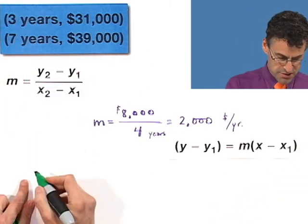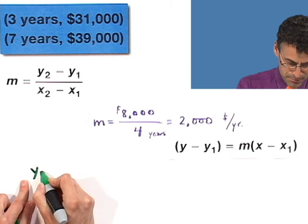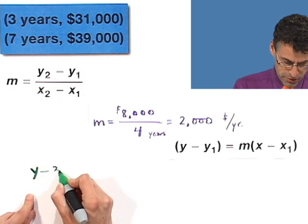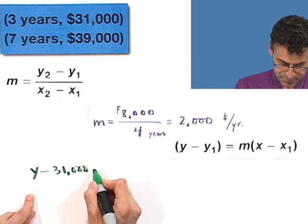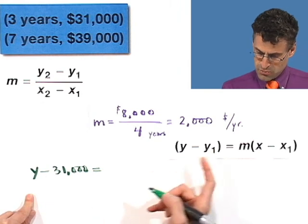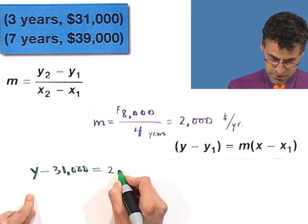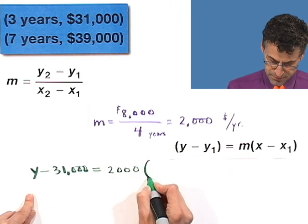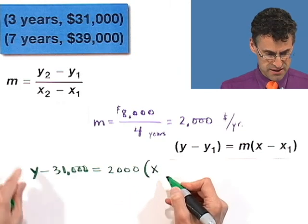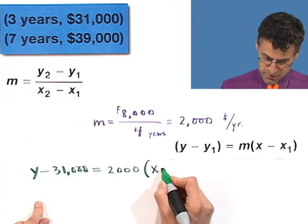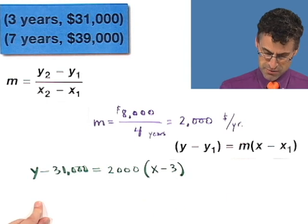So y minus this value, 31,000, is going to equal the slope, which we just figured out to be 2,000, times x minus the corresponding x value, which is 3. So x minus 3.